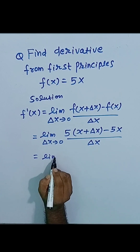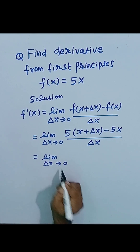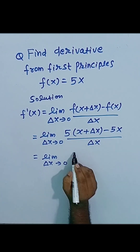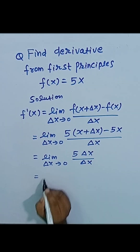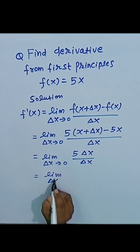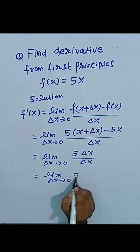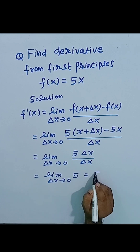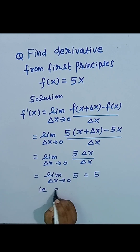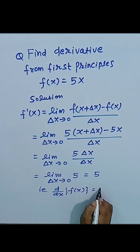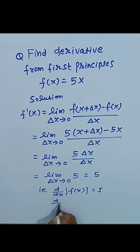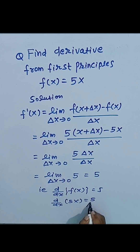So here we will get limit delta x tends to 0, 5 delta x divided by delta x, which is equal to limit delta x tends to 0 of 5, which equals 5. That is, d by dx of f(x) is equal to 5, so we can say d by dx of 5x is equal to 5.